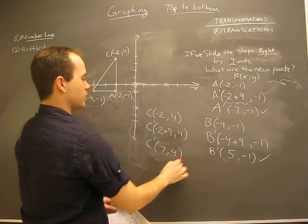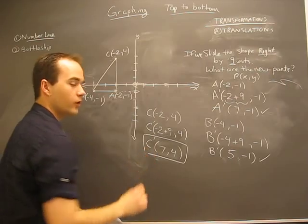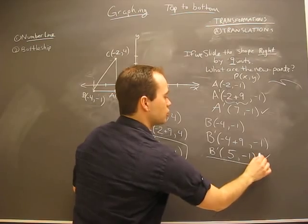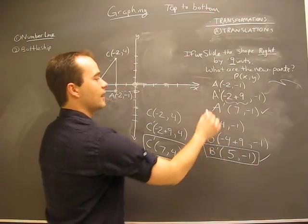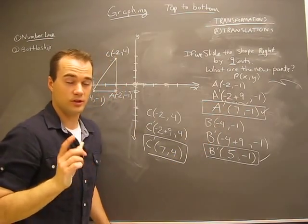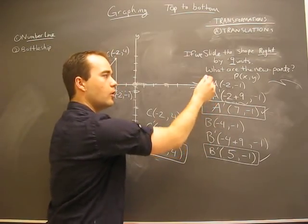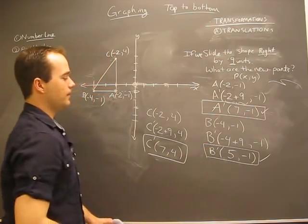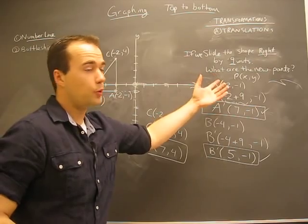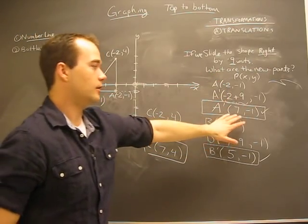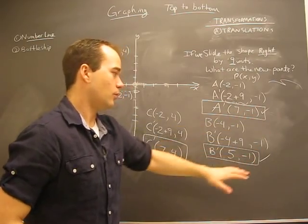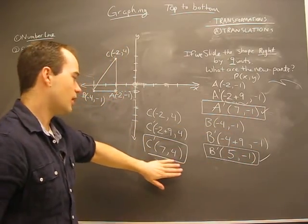So there are new points. Anytime you're doing this in your math notebook and you're going to give it to your teacher to correct, make sure that they know where your final answers are so that it is easy to find. And then of course for your studying, you're going to want to know, oh here's my start, here's my finish. So to answer the question, if we slide the shape right by nine units, what are the new points? The new points are A prime is seven, negative one. There's the B prime and there's the C prime.